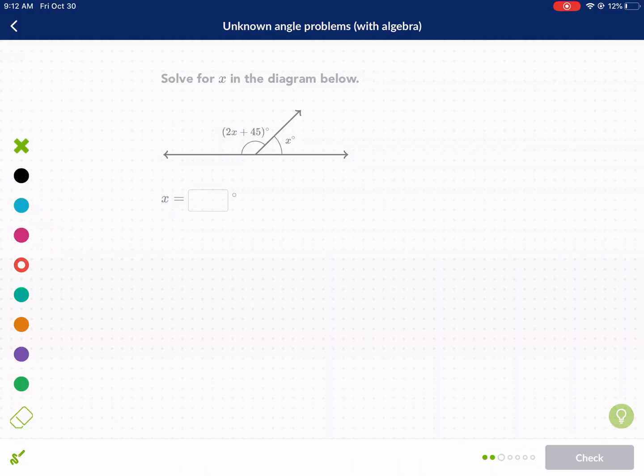Now we have a supplementary angle situation. This makes a straight line. This is a linear pair. So the blue angle and the green angle form a linear pair. The blue angle and the green angle add up to the linear pair, which is 180 degrees. That's what a straight line, how many degrees are in a straight line. So now we can substitute the value. We have 2X plus 45 plus X, and that equals 180.